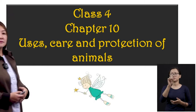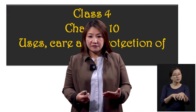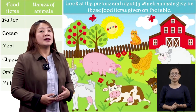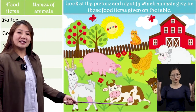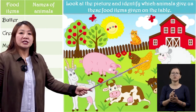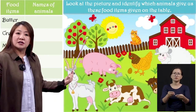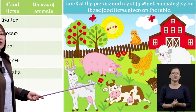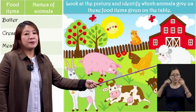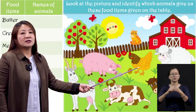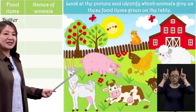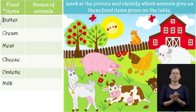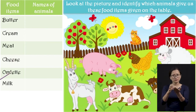That is chapter 10 — how animals serve us. Let us look at a picture. There are so many animals here. Let us identify which animals give us which food items. You can see a sheep, a horse, chicken, a cat, pig, goat, and a cow. And in this table, you will have the food items: butter, cream, meat, cheese, omelette, and milk.